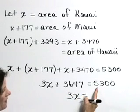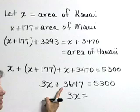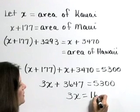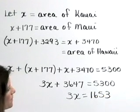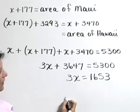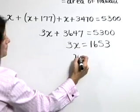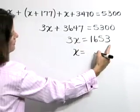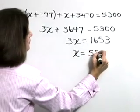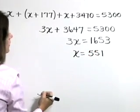And on the right, 5,300 minus 3,647 is 1,653. As a last step, divide both sides by 3. 1,653 divided by 3 is 551.